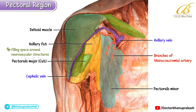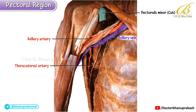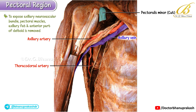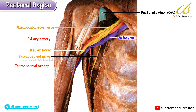In this dissection the pectoralis minor has been cut and reflected to expose the axillary vessels. The thoracodorsal artery is clearly visible — this is a terminal branch of the subscapular artery, which itself arises from the axillary artery. To fully expose the axillary neurovascular bundle, the pectoral muscles, axillary fat, and the anterior part of the deltoid have been removed, revealing the deeper structures. Several important nerves can be appreciated: the median nerve, the musculocutaneous nerve, the thoracodorsal nerve running alongside the thoracodorsal artery, and the long thoracic nerve, also known as the nerve of Bell.